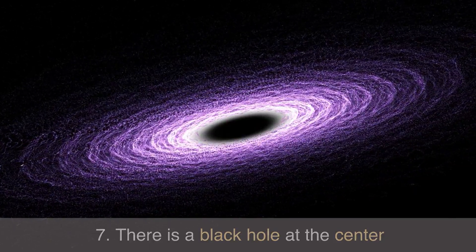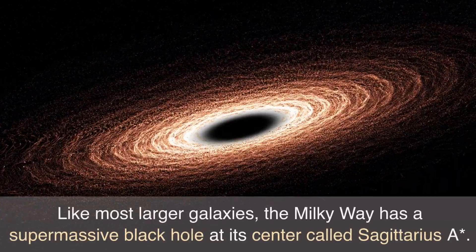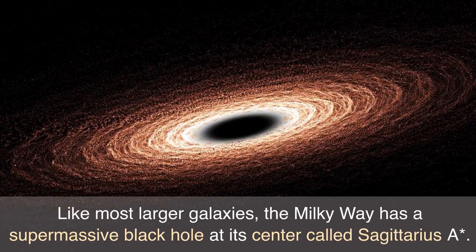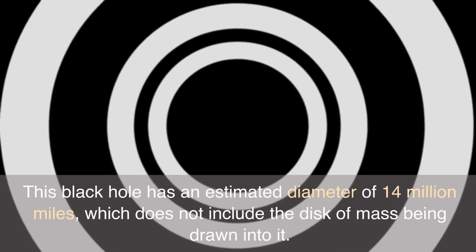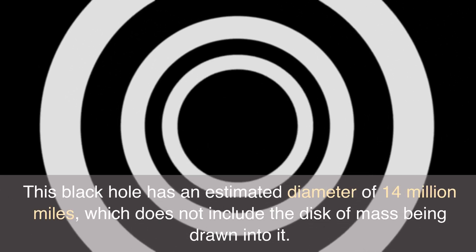Number 7: There is a black hole at the center. Like most larger galaxies, the Milky Way has a supermassive black hole at its center called Sagittarius A. This black hole has an estimated diameter of 14 million miles.